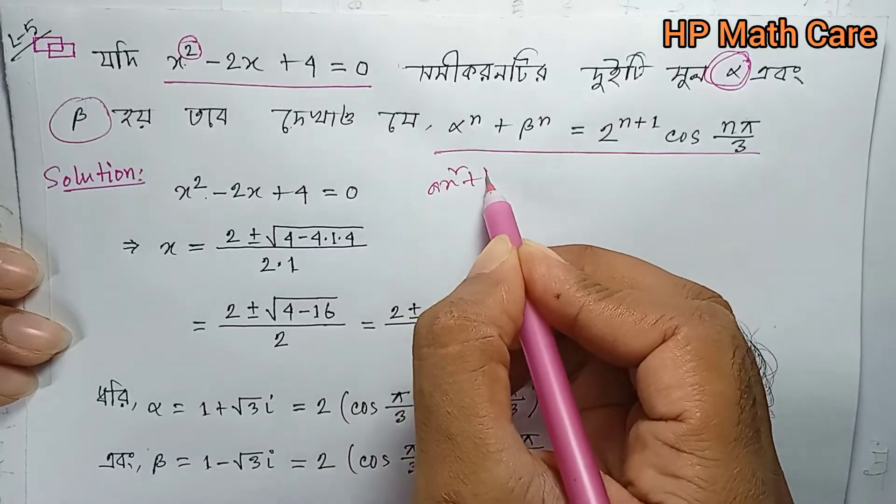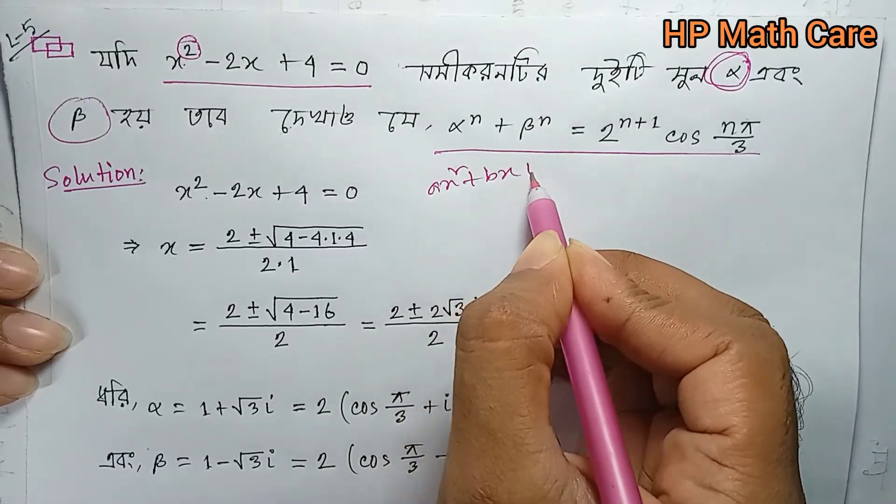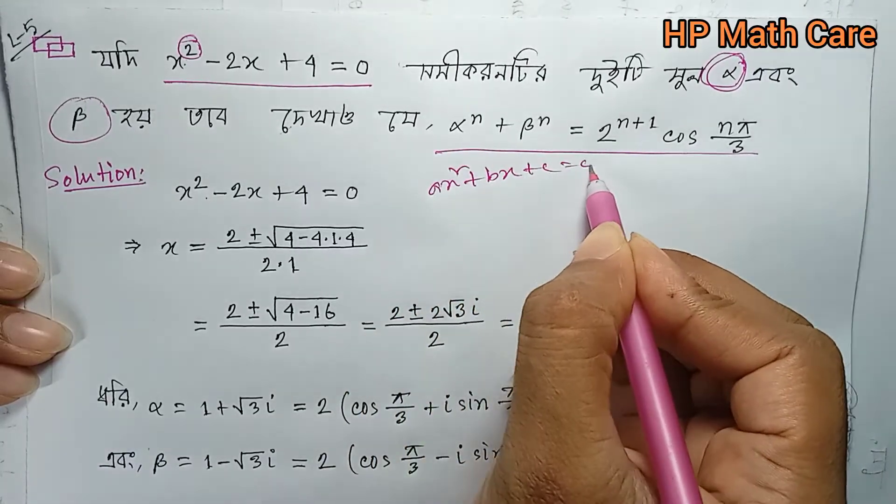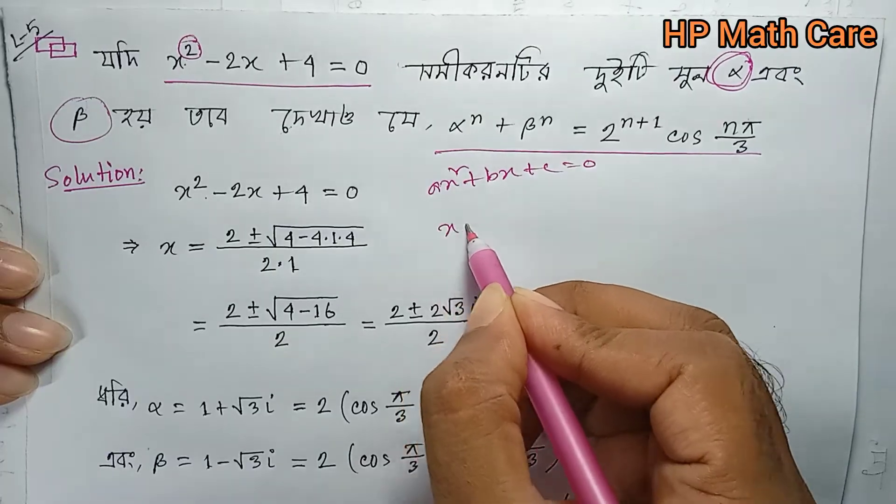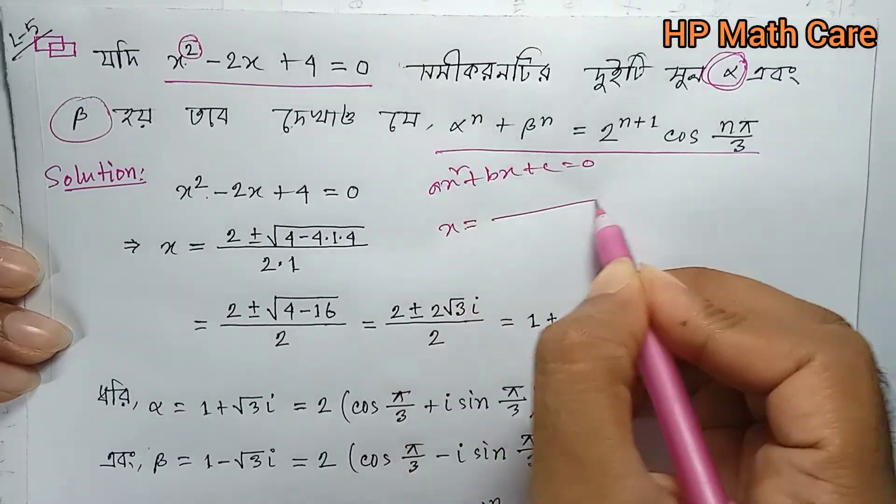Let's check the second form. The general quadratic is ax squared plus bx plus c equals 0. We are going to check the second problem.